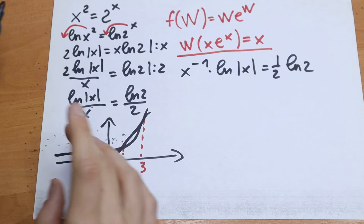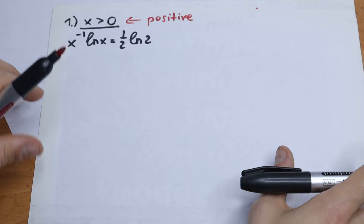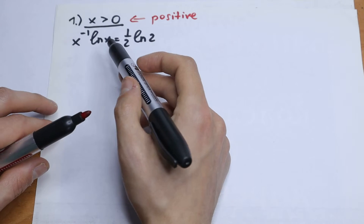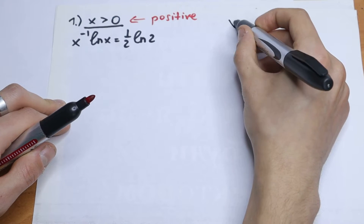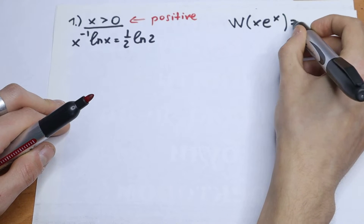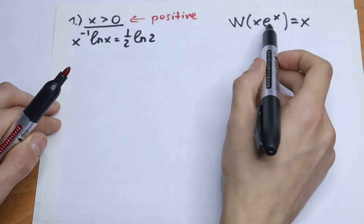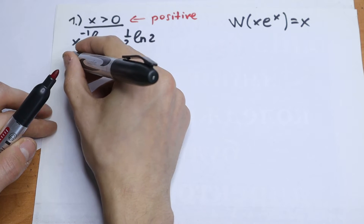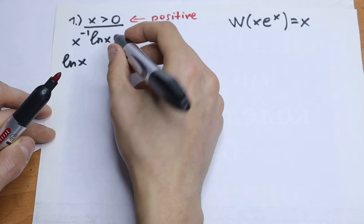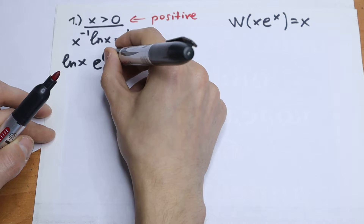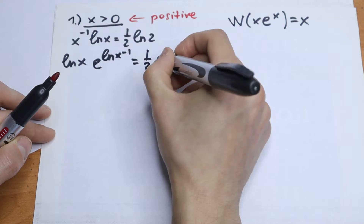For Case 1, x is greater than zero. We have x to the minus one power times natural log x equals one over two times natural log 2. We write x as e to the power natural log x to the minus one power — nothing changes, it's just a rewriting. And the right-hand side equals one over two times natural log 2.